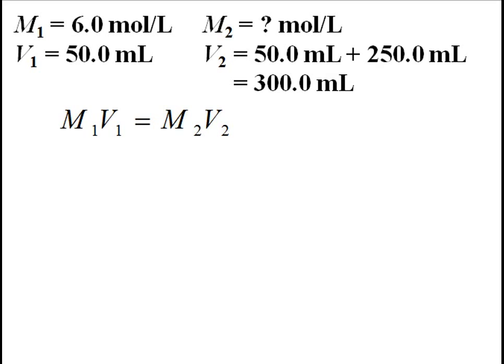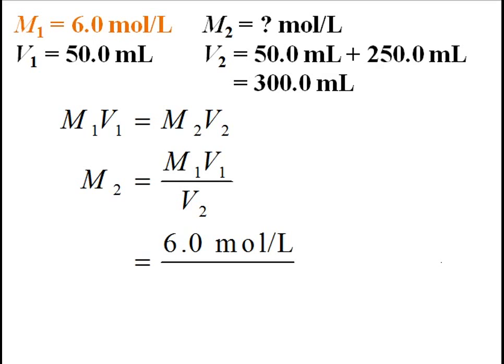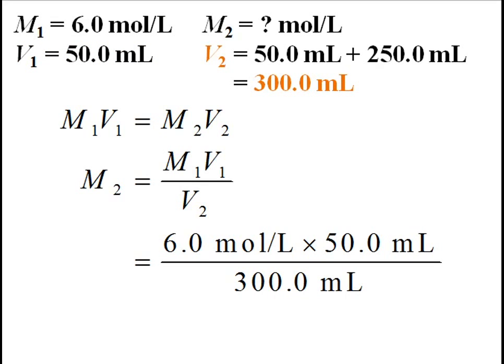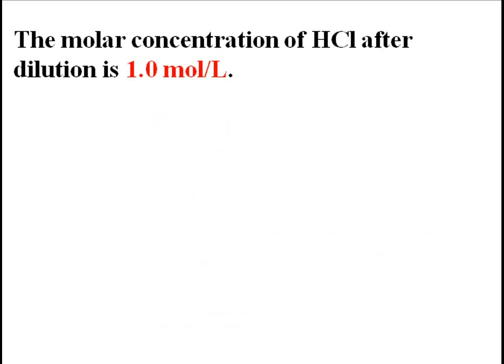We write the dilution formula, then solve it for M2, our unknown. M2 equals M1V1 over V2. M1 is 6 moles per liter, V1 is 50 milliliters, and V2 is 300 milliliters. Notice we can cancel out the milliliters on the top and bottom of the fraction. Solving this expression gives 1 mole per liter. So the molar concentration of HCl after dilution is 1 mole per liter.